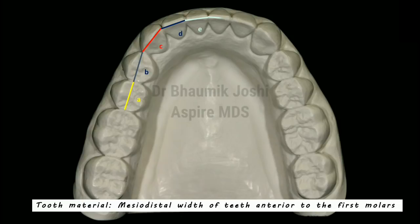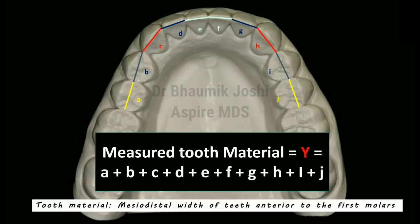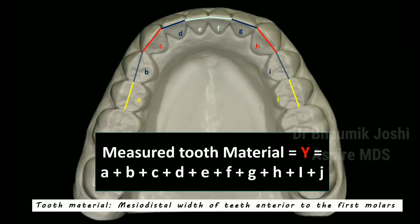The second component of this analysis is to get the tooth material. The tooth material mesial to the first permanent molars is measured using the mesiodistal length of all the teeth. Here you can see the mesiodistal width of all the teeth are labeled as a, b, c up to j. The tooth material measured to the first permanent molar can be obtained by summing them all together from a to j. Let's say that value is Y.